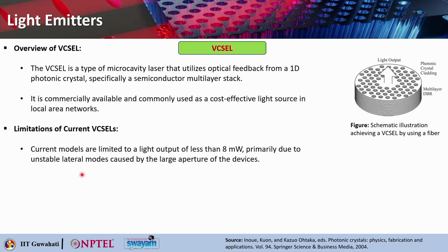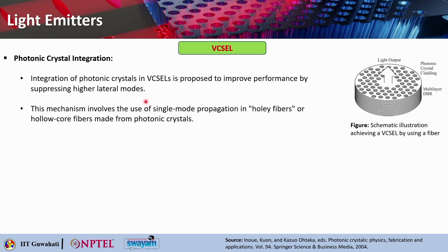The current VCSEL models are limited to light output of less than 8 milliwatt, particularly due to unstable lateral modes caused by the large aperture of the device. Integration of photonic crystals in VCSEL is proposed to improve performance by suppressing the higher lateral modes. When you put the photonic crystal cladding in, this mechanism will involve the use of single mode propagation in holey fibers or hollow core fibers made from photonic crystals, and that way you will be able to suppress the higher lateral modes.